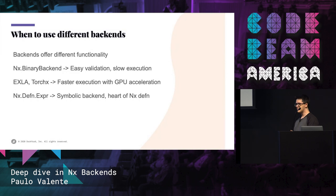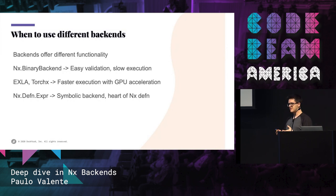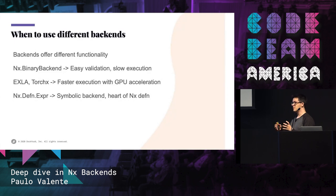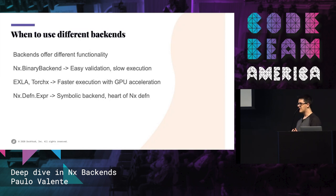And finally, there's the NX DefN Expression backend, which is the heart of NX. I say that because the NX DefN Expression backend is what enables us to get close to an AST — we get a symbolical representation of our code. And that symbolical representation will enable us to compile things and to manipulate the symbolical representation into other symbols, so we can do lots and lots of stuff.